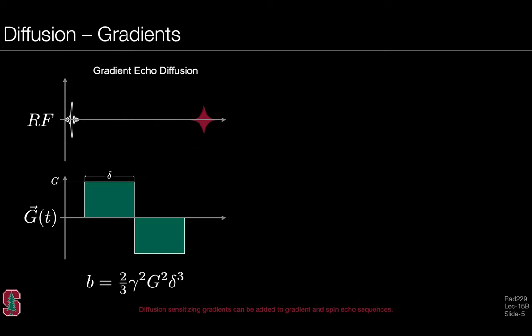What is the B-value? There are different ways to apply diffusion-sensitizing gradients. In a gradient echo sequence, we begin with an RF pulse to generate transverse magnetization and use a bipolar gradient waveform with amplitude G and duration delta—equal and opposite lobes—so that any phase generated during the first lobe is offset by the second lobe, and stationary spins accumulate no net phase. The B-value depends on the gradient amplitude, duration delta, and the gyromagnetic ratio, and can be calculated for this simple box-like gradient form.